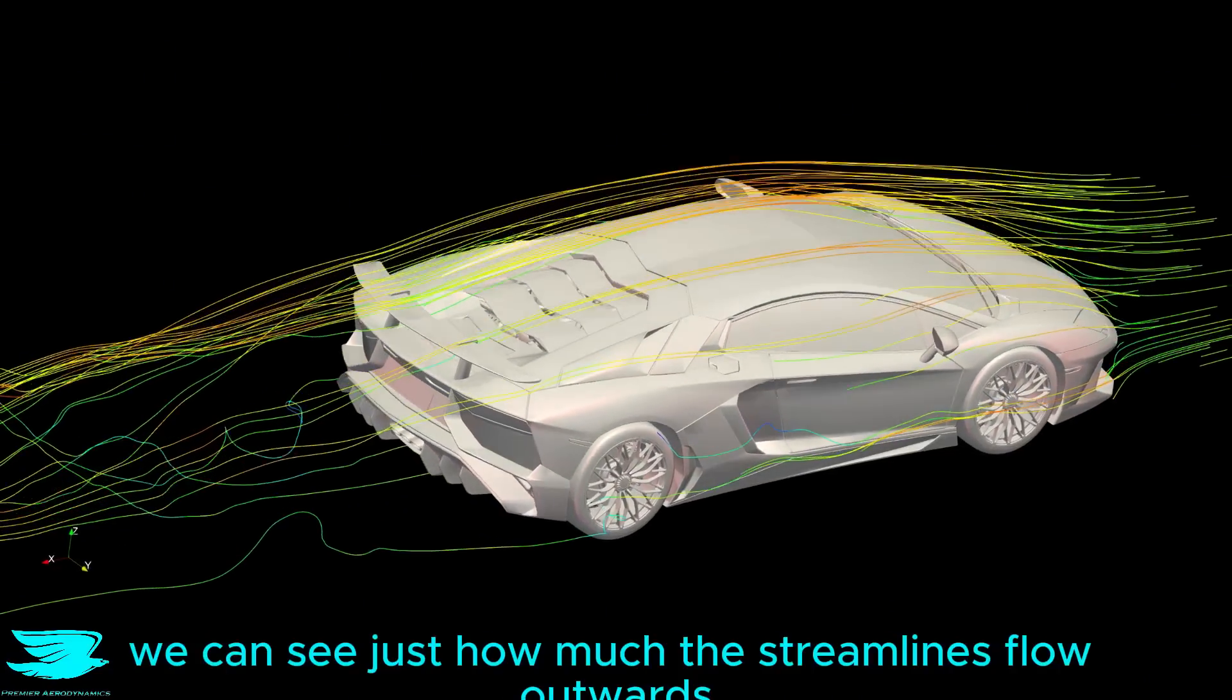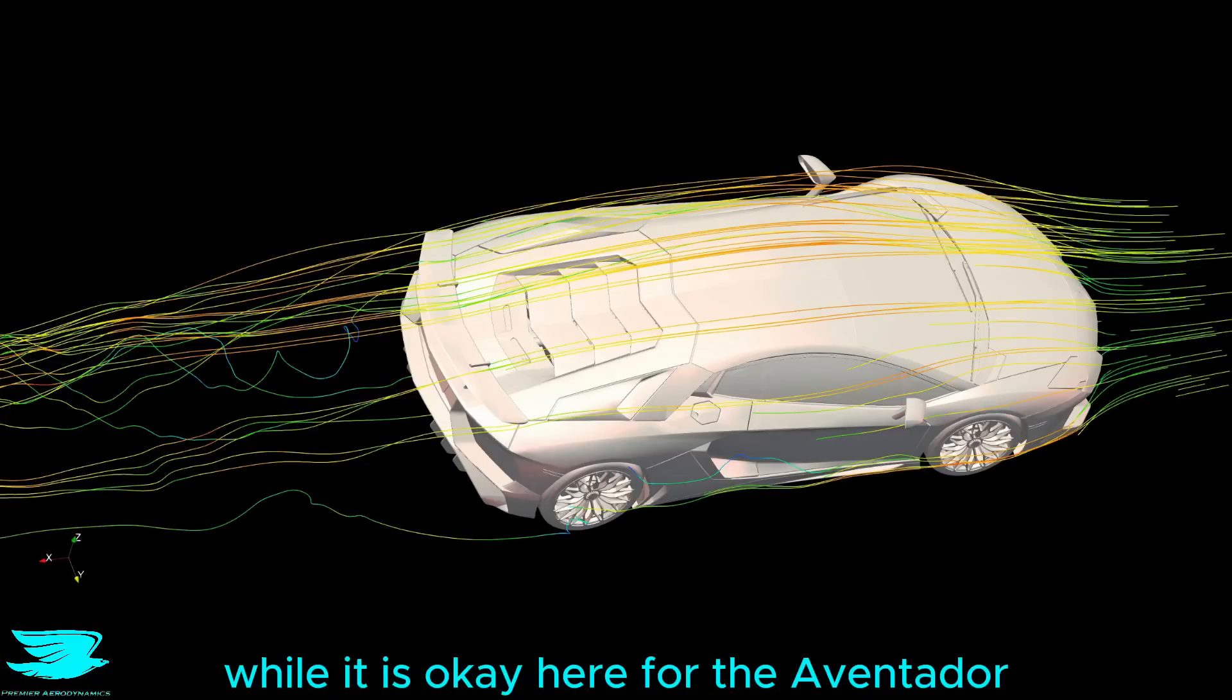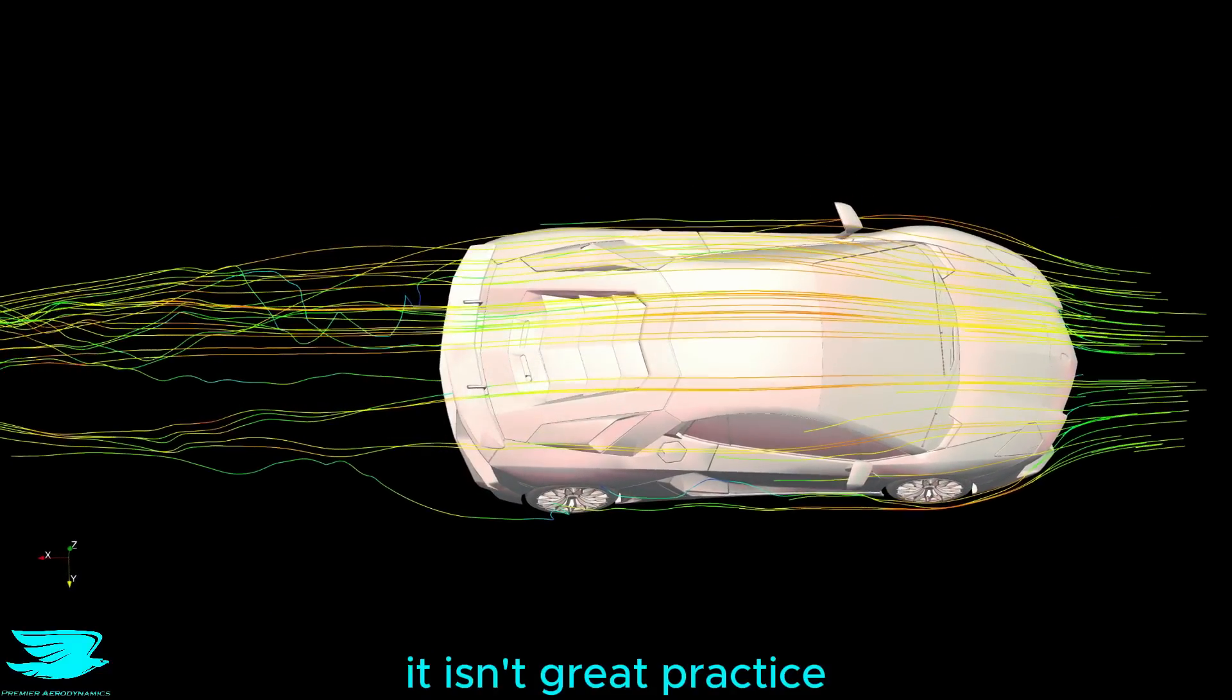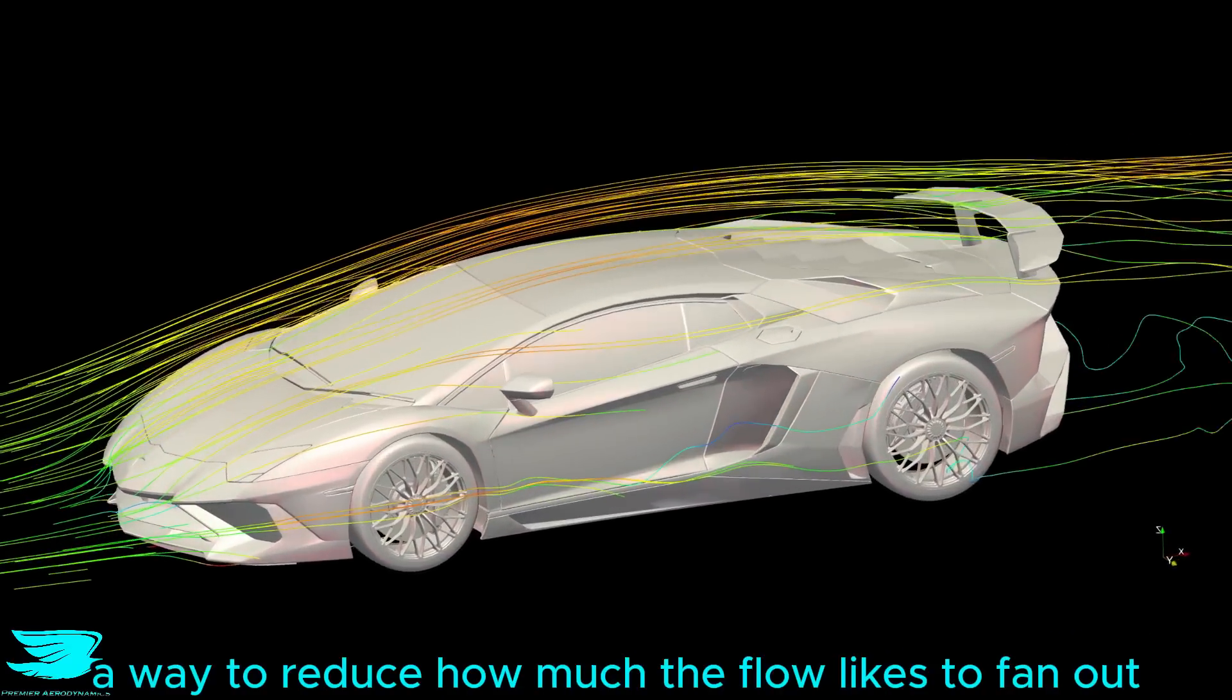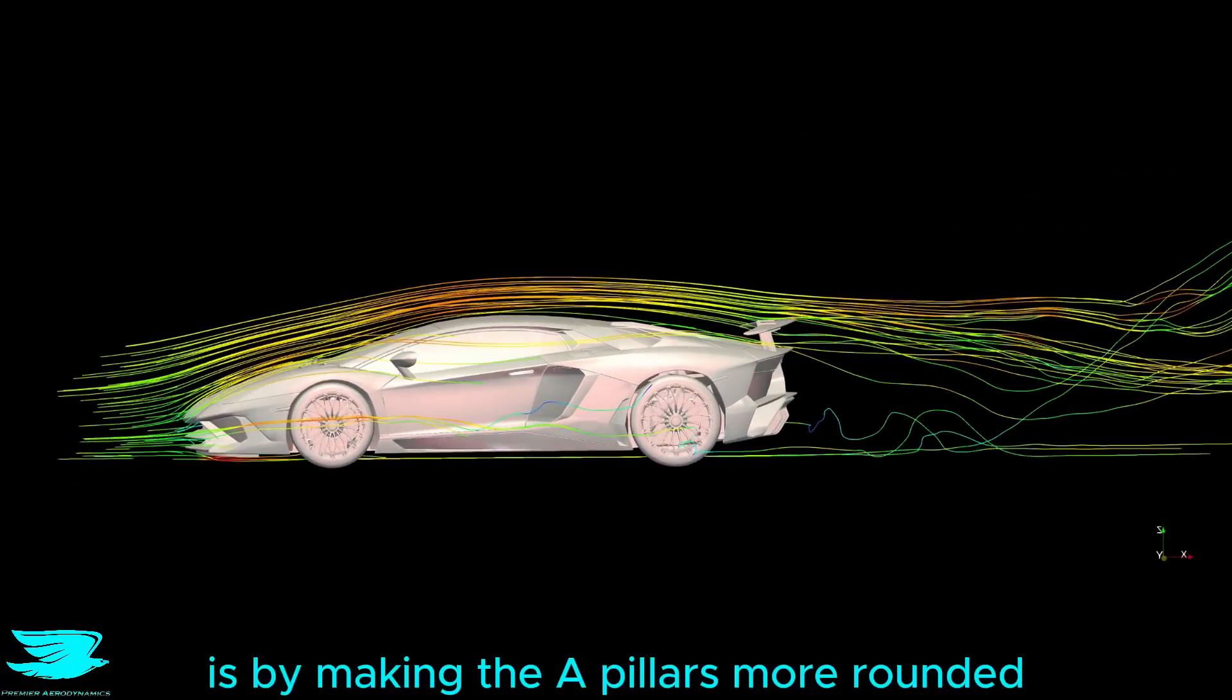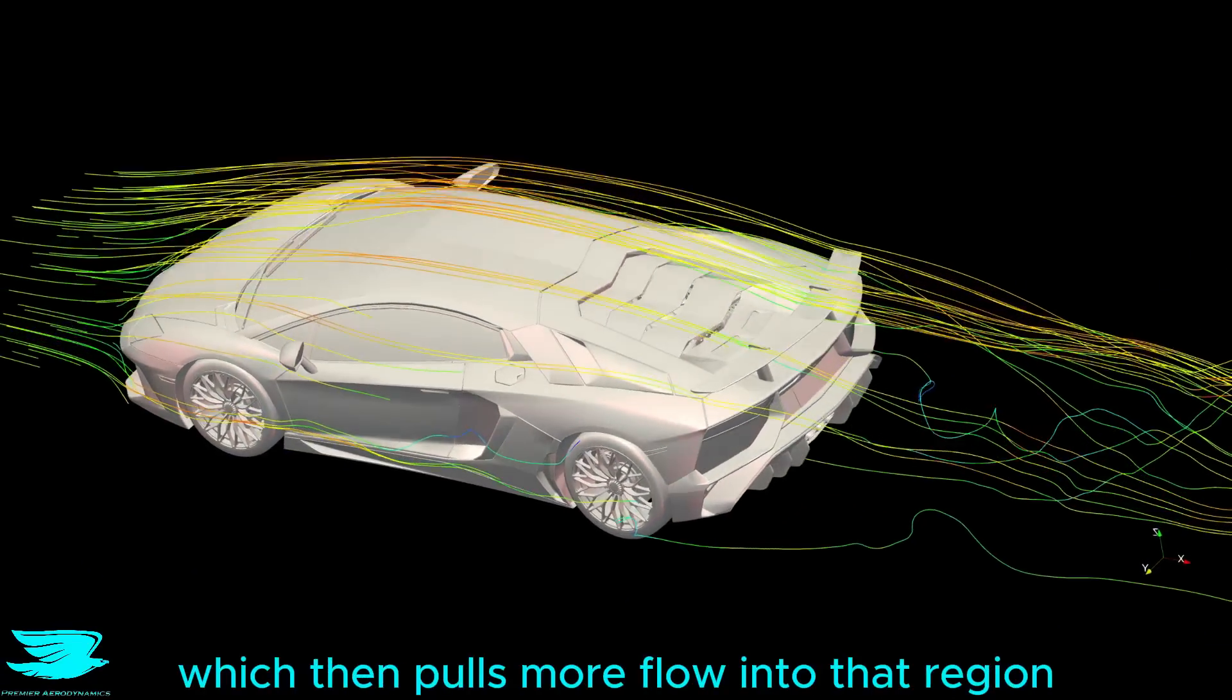From the top, we can see just how much the streamlines flow outwards and wrap around the A pillars. While it is okay here for the Aventador, it isn't great practice because that can easily lead to A pillar vortices. A way to reduce how much the flow likes to fan out is by making the A pillars more rounded, so you don't get lower pressure around the windows, which then pulls more flow into that region.